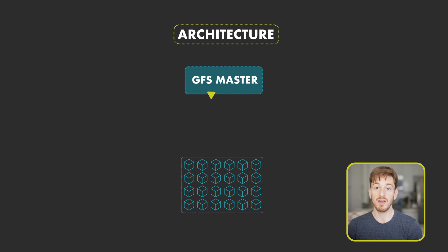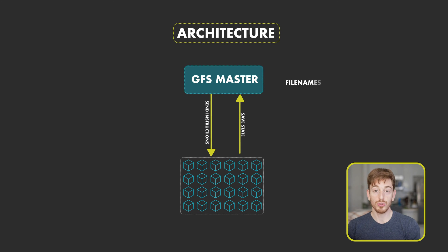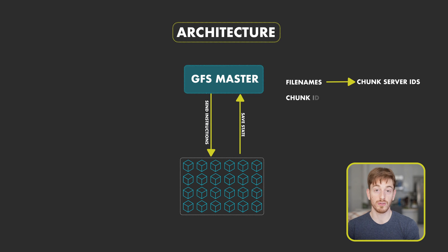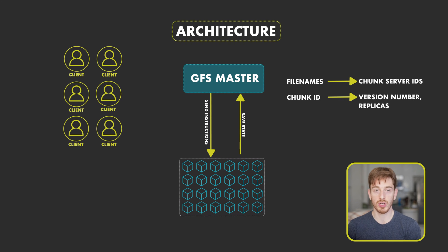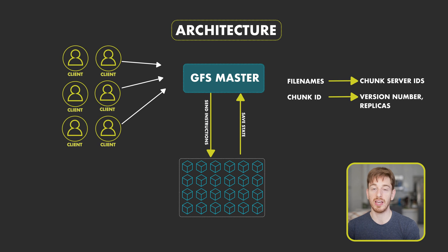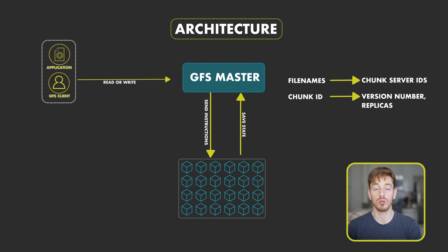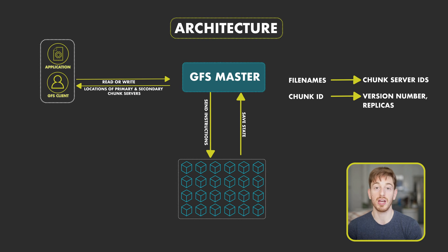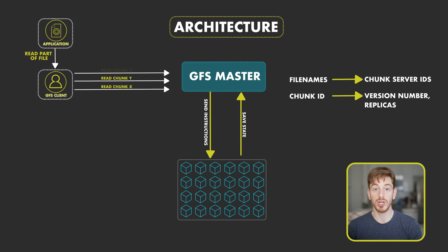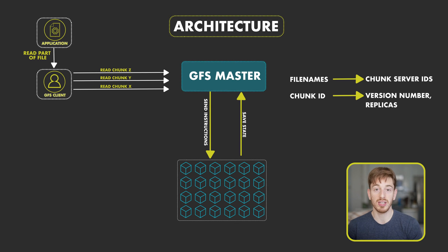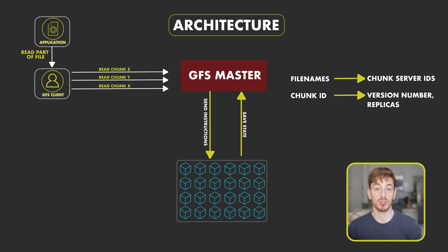If there is a network partition or an outage and one chunk server is not responding, the chunk can be accessed through any of the other two replicas. The master saves in memory the metadata of all chunk servers: a mapping of file names and lists of their chunk IDs, each chunk ID with its version number, the list of chunk servers storing the replicas, and which one is the primary replica. Since we have many concurrent reads and writes, the master maintains minimal communication with each client so it doesn't become a bottleneck. Each time a client makes a request, the master returns only the primary replica so the client can make requests directly against it.